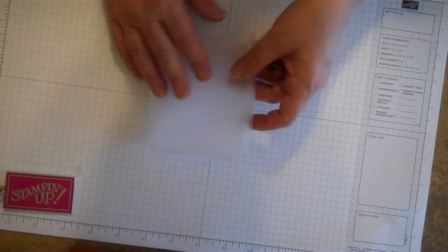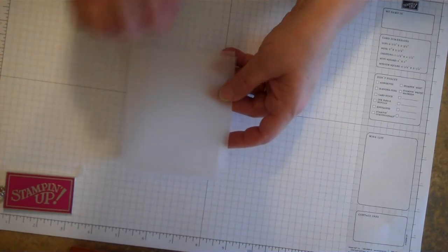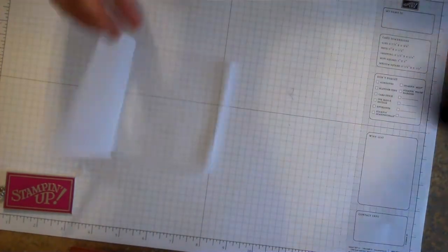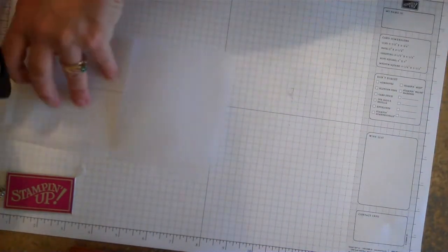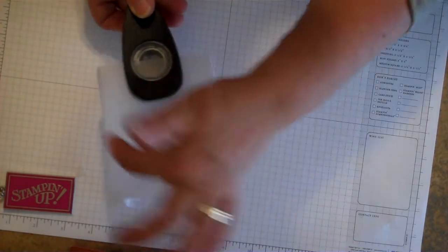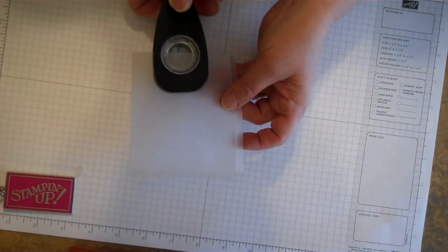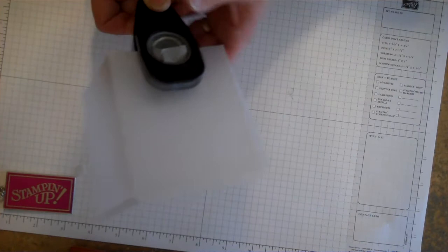Before we actually glue this or tape this, we're going to make a little hole here so that we can pull out our card. I'm using a 1 inch circle punch and I'm just going to place that about halfway down and centered in the middle of the front of the card. Get it as close to the middle as you can and punch out a little notch.